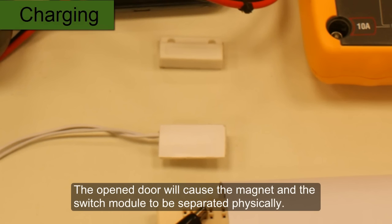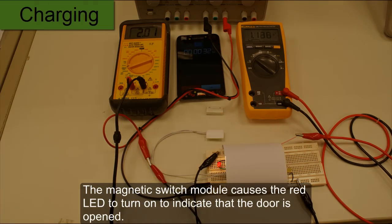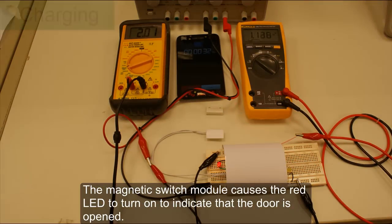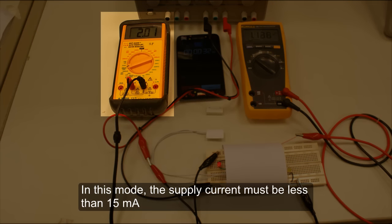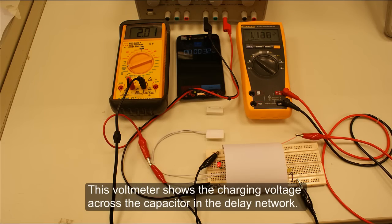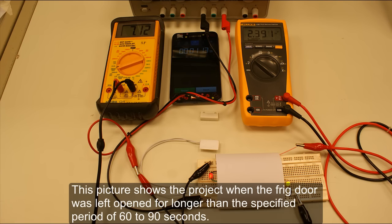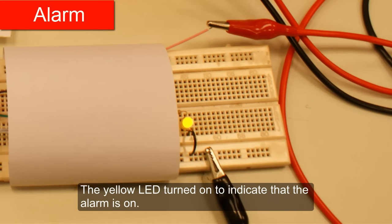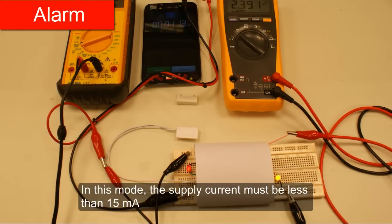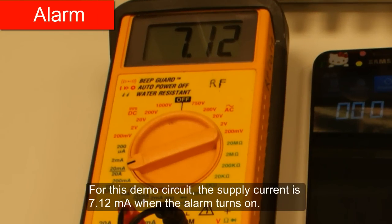The open door will cause the magnet and the switch module to be separated physically. The magnetic switch module causes the red LED to turn on to indicate that the door is opened. The stopwatch is activated manually. In this mode, the supply current must be less than 15 milliamperes.